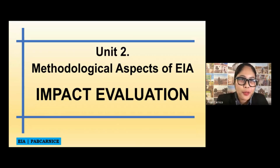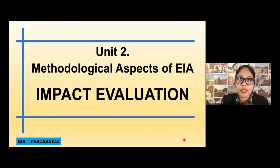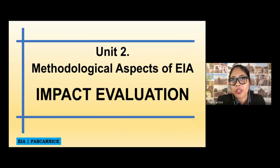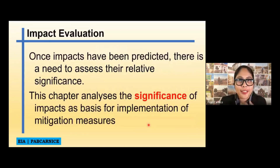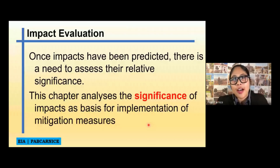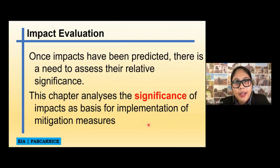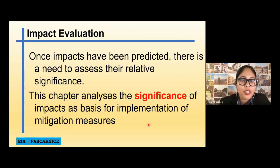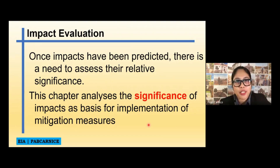So, let's continue. After that impact prediction, of course, we have to evaluate those predictions. Once impact has been predicted, there is a need to assess the relative significance, because there is a possibility that these impacts might not have an adverse impact. It may have an impact to the specific ecosystem or community, but its veracity, magnitude, and significance might not be that much. In this topic, we will analyze the significance of impacts as basis for implementation of mitigation measures.